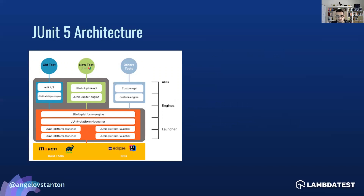JUnit 5 isn't a monolith — it actually contains three parts: JUnit Platform, JUnit Jupiter, and JUnit Vintage. The JUnit Platform defines the test engine API for developing a testing framework that runs on the JVM. It provides a console launcher to launch the platform from the command line, plus a JUnit 5 based runner for running any test engine in a JUnit 4 based environment. There is first-class support in most popular IDEs such as IntelliJ IDEA, Eclipse, NetBeans, and Visual Studio Code, and build tools such as Gradle and Maven. The second part, JUnit Jupiter, is the combination of the new programming model and extension model for writing tests and extensions in JUnit 5, and provides a test engine for running Jupiter-based tests on the platform.